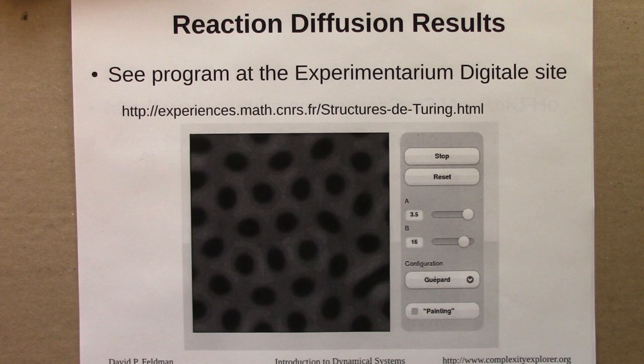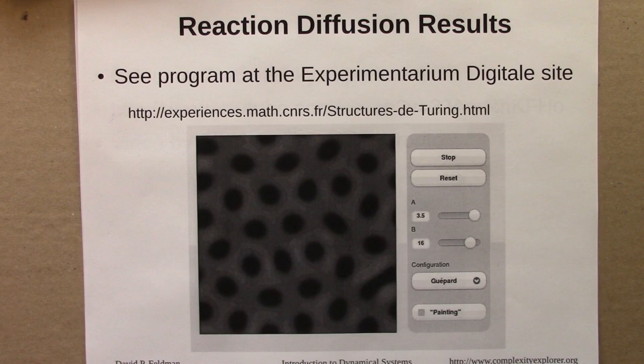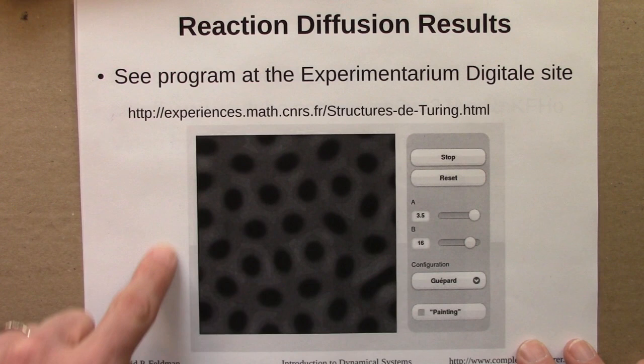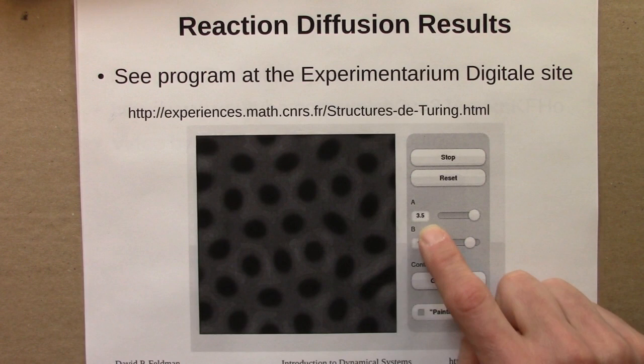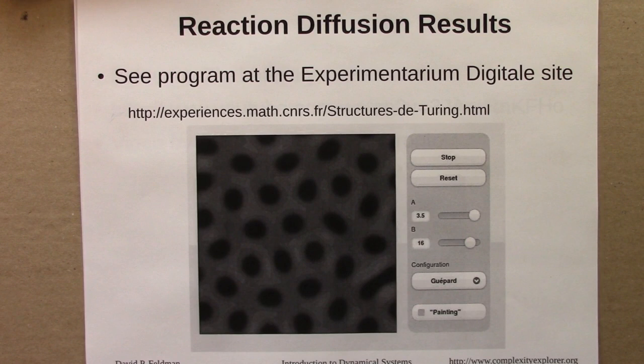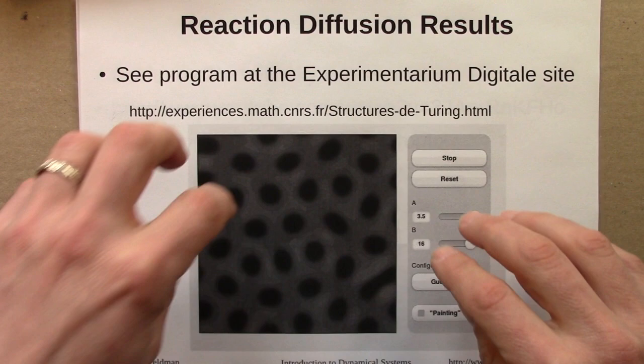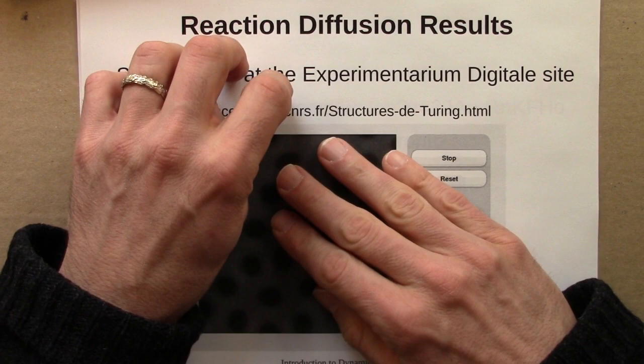So these are reaction diffusion systems. We experimented with the excellent program at Experimentarium Digital — there's a link to this on the links page. With the Guaypa setting, this makes cheetah spots. The diffusion rate of U was 3.5 and B was 16, and that program specifies what the F and G functions are as well. The main point is that even though we have a diffusive system where things should be spreading out, and you wouldn't expect a higher density of U in one place to be permanent — it should diffuse away — the reaction diffusion interaction can produce stable spatial structures.